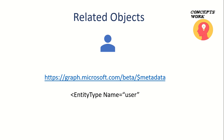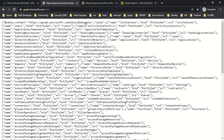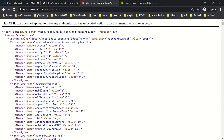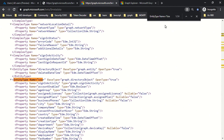The scope of this video is not to explain how all the metadata works in depth — I will cover a dedicated video for that — but as of now we'll go to this link and see what information we're getting. I am at graph.microsoft.com forward slash beta forward slash metadata and I'm searching for 'EntityType Name equals User'.